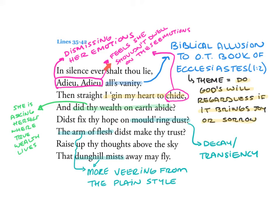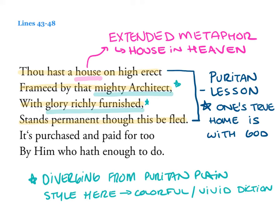'Thou hast a house on high erect, framed by that mighty architect. With glory richly furnished, stands permanent, though this be fled. It's purchased and paid for too by him who hath enough to do.' We have a digression from the Puritan plain style here — she's using an extended metaphor for this house in heaven. There's a huge Puritan lesson: one's true home is with God. Whatever you have here on earth doesn't matter because eventually we will be with God. The contrast is between the house you live in here on earth versus the house you will end up in spiritually in heaven.